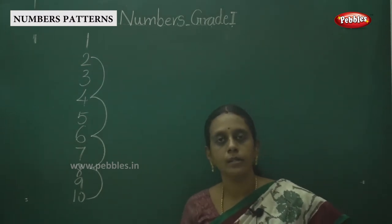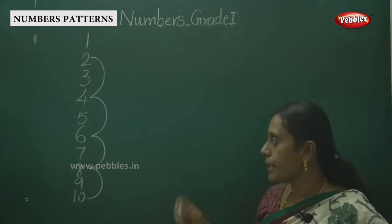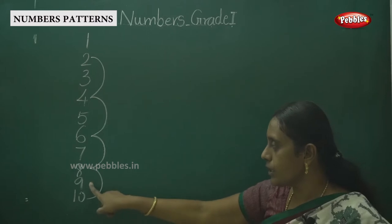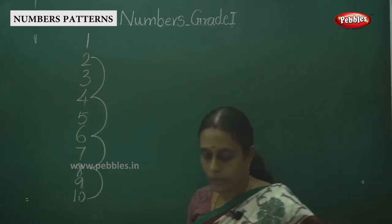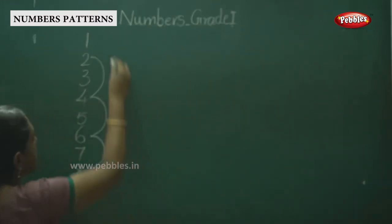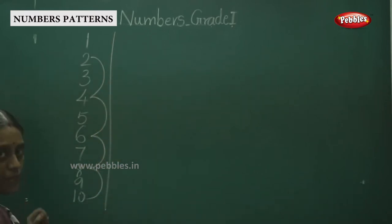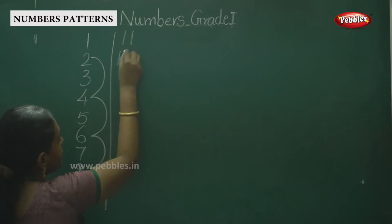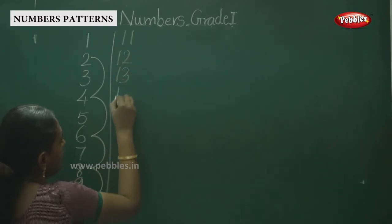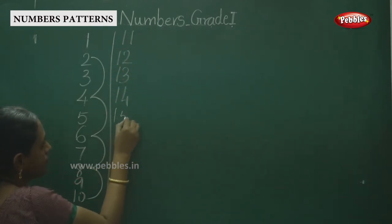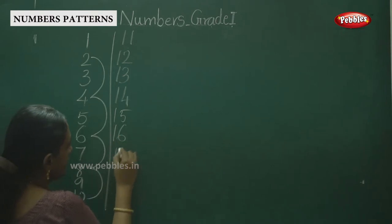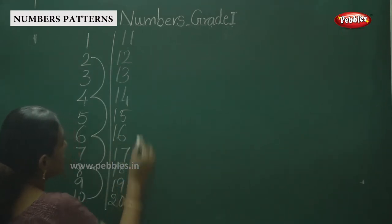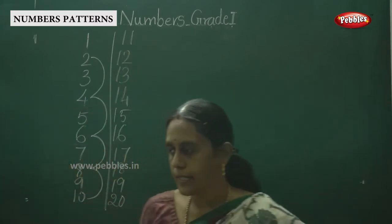This is counting by twos — you jump over one number each time. That gives us: 2, 4, 6, 8, 10. Next, continuing the same way, we write 11, 12, 13, 14, 15, 16, 17, 18, 19, 20.